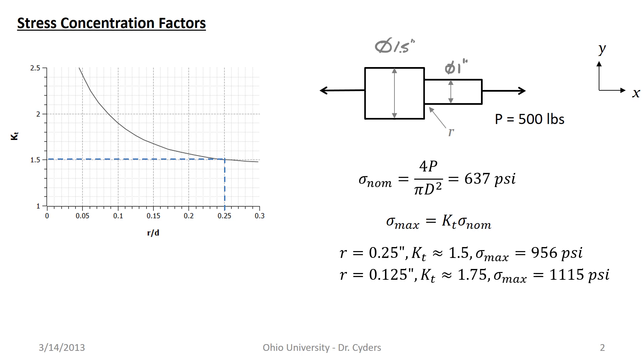For example, if I move down to an eighth of an inch, so I half that radius, now I get a KT of 1.75, and I can again just read that right off the graph. That gives me a max stress of 1115 PSI. If I sharpen down to a sixteenth inch radius, now we're getting to the point where we're near a tool tip radius for a lathe tool. Now I see a KT of 2.2 and a maximum stress of 1400 PSI where I normally would have calculated a maximum ignoring that stress concentration factor of only 637 PSI. This is significant.